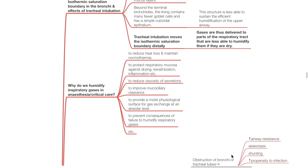Why do we humidify inspired gases in anesthesia or critical care? Reasons include: to reduce heat loss and maintain normothermia; to protect the respiratory mucosa against drying, keratinization and inflammation; to reduce the viscosity of secretions; to improve mucociliary clearance; to provide a moist physiological surface for gas exchange at the alveolar level; and to prevent consequences of failure to humidify respiratory gases.